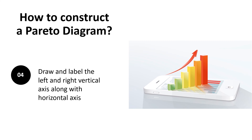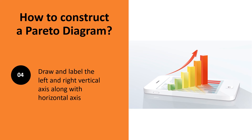In the fourth step, draw and label the vertical axes on the left and right and the horizontal axis. Mark the left axis from zero to the total or slightly beyond, and fill in a caption describing the metric being used. Divide the horizontal axis into as many divisions as there are contributions, and list the donors in order of importance from largest to smallest, left to right. You can also give them a caption; if the names are lengthy, designate the axes A, B, C, and so on, and offer a separate key.